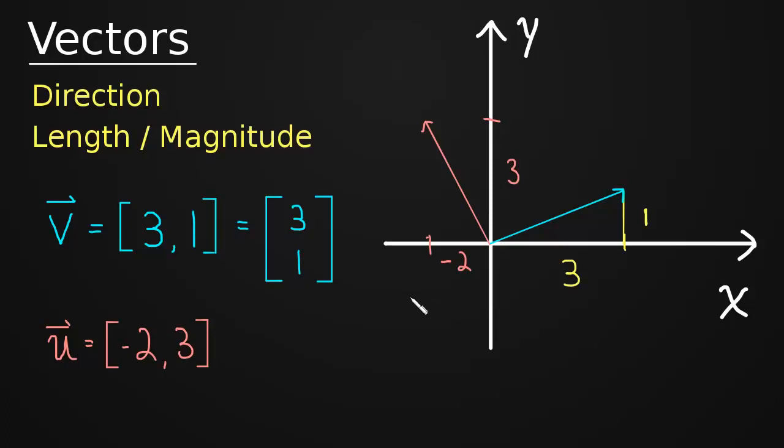Nothing to it. And of course, we could have written this as a column vector - negative 2, 3 - if we wanted to. Okay, so we have that down, but what about direction and length?